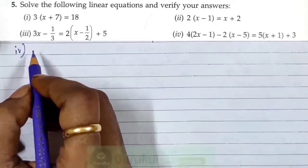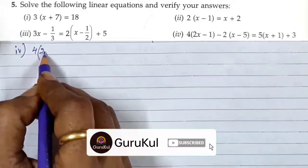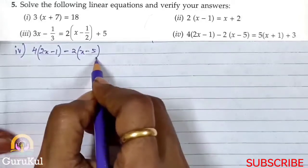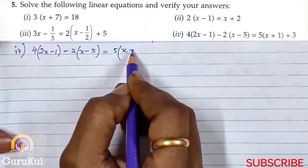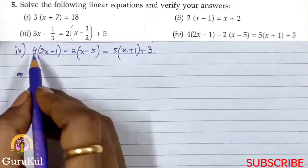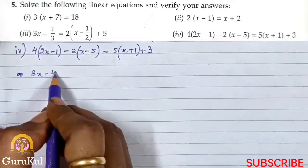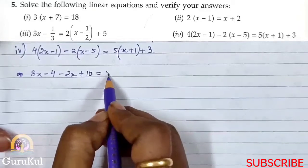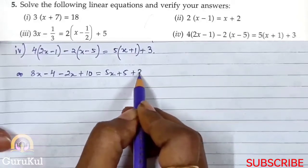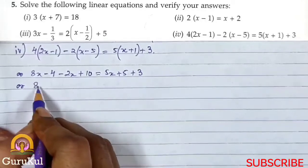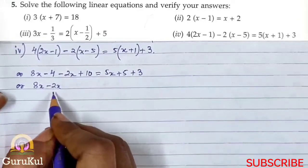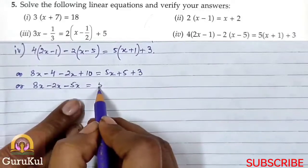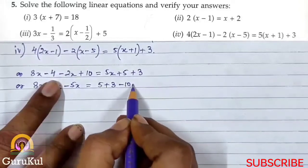The fourth part of sum number 5 is: 4 bracket 2x minus 1 bracket closed minus 2 bracket x minus 5 bracket closed is equal to 5 bracket x plus 1 bracket closed plus 3. Expanding: 4 twos are 8x, minus 4 ones are 4, minus 2x — and minus into minus is plus — so plus 10, is equal to 5x plus 5 plus 3. Now bringing all x to the left-hand side: 8x minus 2x, already on the left, minus 5x coming from the right.